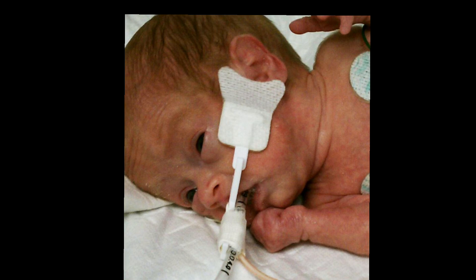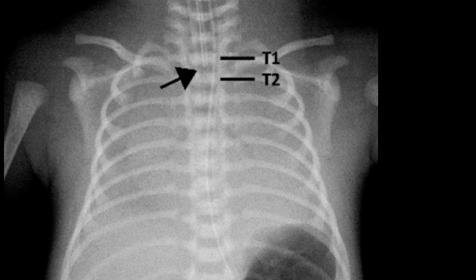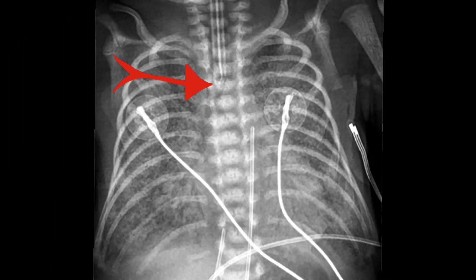You can now secure your tube per unit protocol. There are several methods for measuring tube depth. One is measuring the newborn's nasal tragus length and adding 1 cm — that gives the depth at the lip. Number two is adding 6 plus the weight in kilos: if they're 1 kilo, that's 7 cm at the lip. This also brings us to the 7-8-9 rule: 1 kilo = 7 cm, 2 kilos = 8 cm, 3 kilos = 9 cm at the lip. The ultimate confirmation is chest X-ray, where the tip should be between T1 and T2, at least 2 cm above the carina.